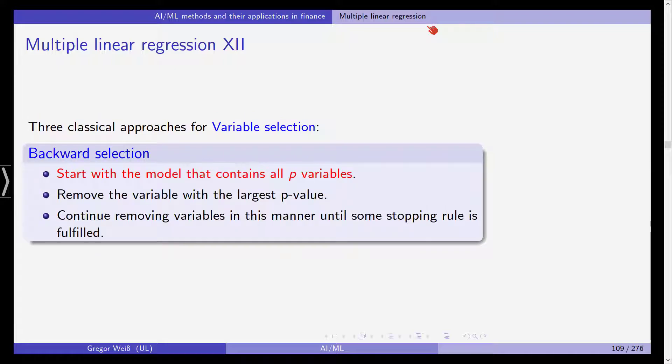In contrast, backward selection is the opposite. You start with the model that contains all potential P variables and you remove the variable with the largest P value and then you go down and try to see which are the variables that are insignificant. And you continue removing variables in this manner again until some stopping rule is fulfilled.